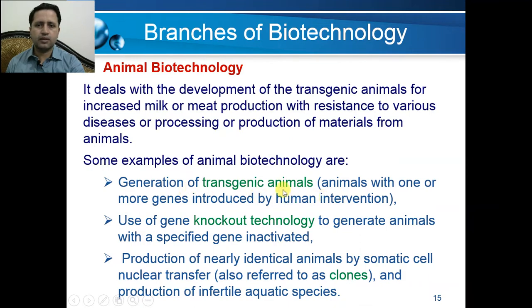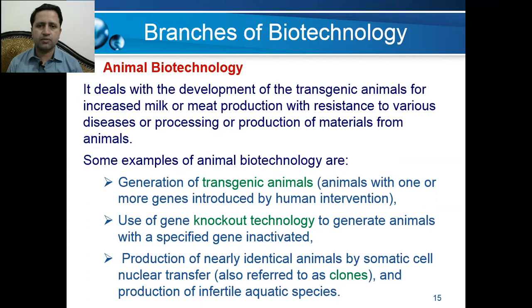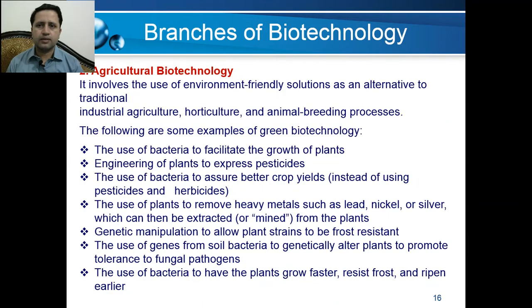In transgenic animal production, scientists produce different animals with one or more genes introduced by human intervention. In gene knockout technology, specific genes are inactivated to generate animals. Another application is the production of identical animals by somatic cell nuclear transfer, also called cloning, and the production of infertile aquatic species. These are just a few applications of animal biotechnology.